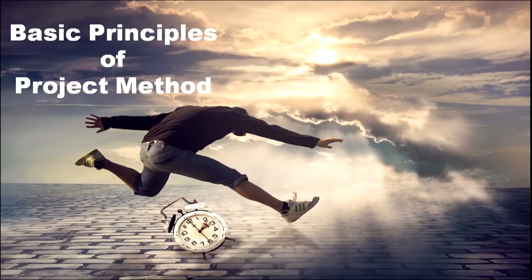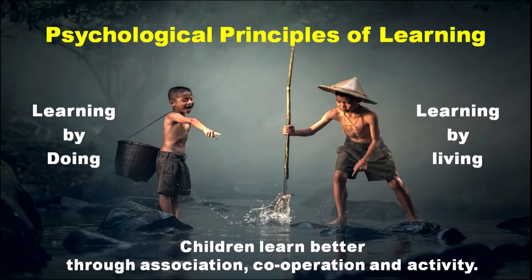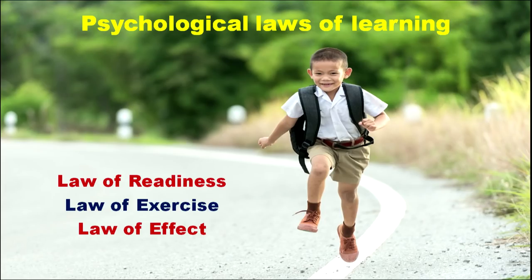The basic principles of project method involve psychological principles of learning: learning by doing, learning by living, and children learn better through association, cooperation, and activity. These are the three philosophical aspects involved in the project method. Similarly, the laws involved are the law of readiness, law of exercise, and law of effect.